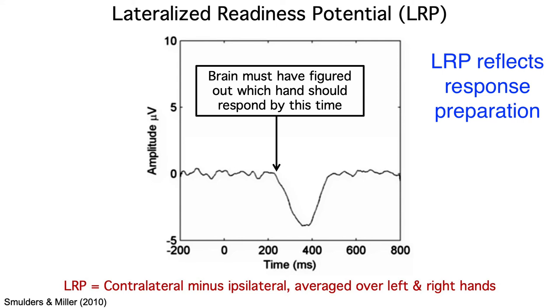How could the voltage be more negative over the contralateral hemisphere if the brain hadn't yet begun to decide which hand to prepare? The onset latency of the LRP is therefore a great index of the amount of time required to determine which motor response is appropriate for a given stimulus.